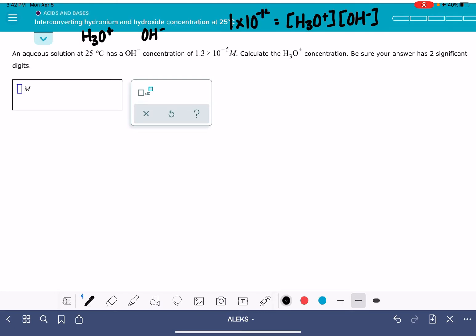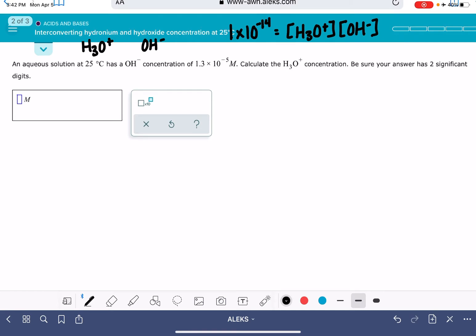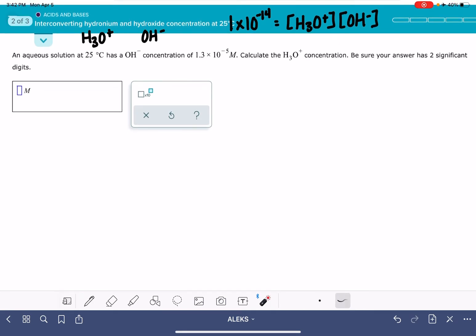So the H3O plus concentration times the OH minus concentration is always going to be equal to 1 times 10 to the minus 14, and we're going to use this equation to solve all of these problems.